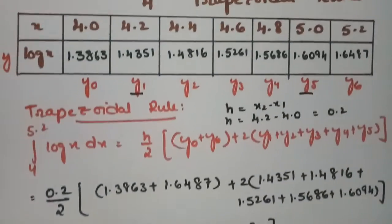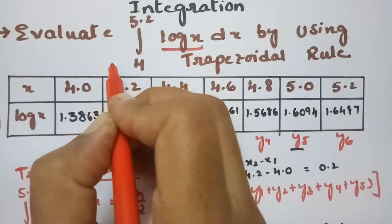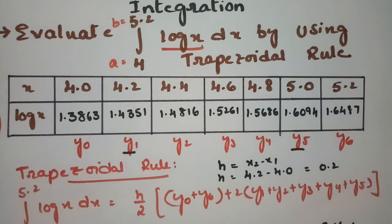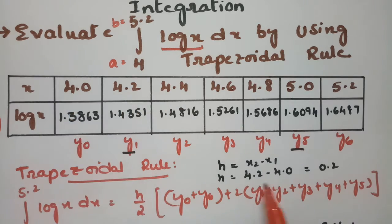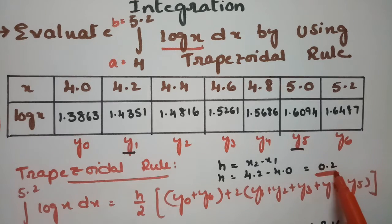So this is how we have to solve. First of all the table is given and the a value is 4 and b value is equal to 5.2. We need the value of h. h is 4.2 minus 4.0 which is equal to 0.2.